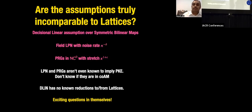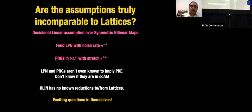Complexity-theoretically, LWE sits in the structured class co-AM, whereas this is not known for LPN and PRG-in-NC0 — our current understanding is that they are really minicrypt-style assumptions. For the Decision Linear assumption, it's a number-theoretic assumption with no known reductions to or from lattices. It would be really interesting if an algorithm like LLL could be applied to solve DLIN — that would give new insights about this problem and open doors for new algorithms.